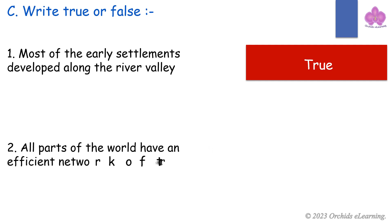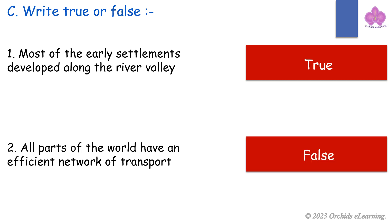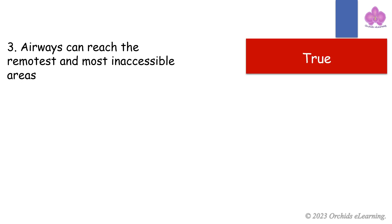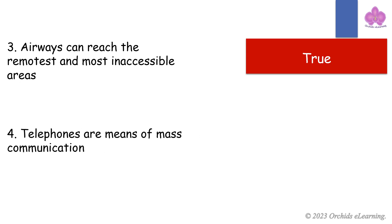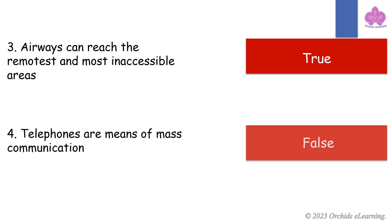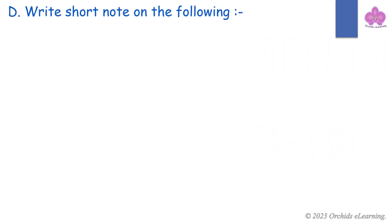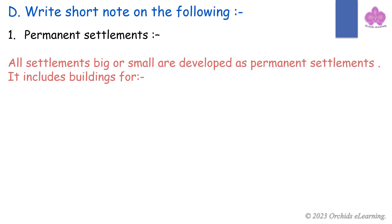All parts of the world have an efficient network of transport — False. Airways can reach the remotest and most inaccessible areas — True. Telephones are means of mass communication — False.